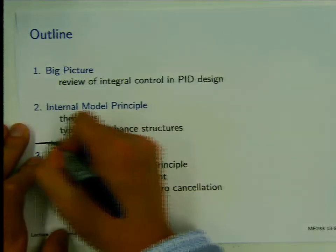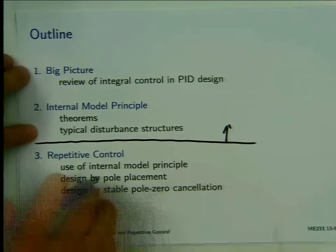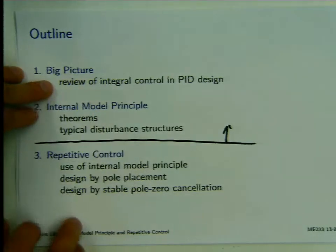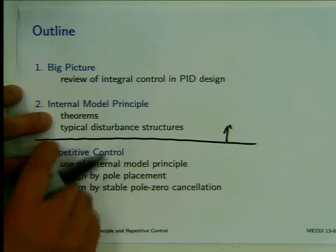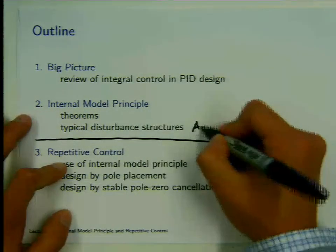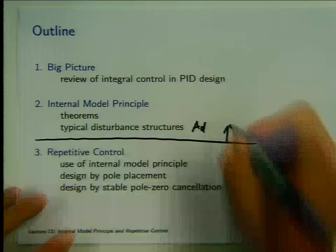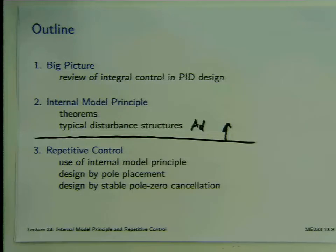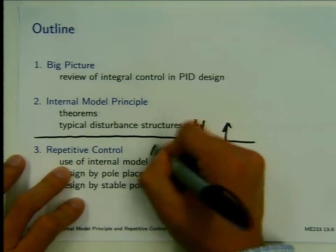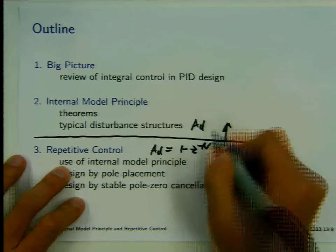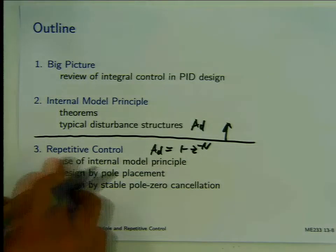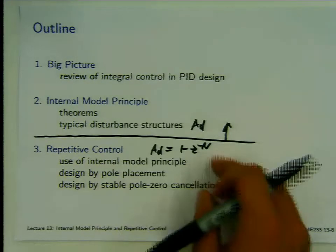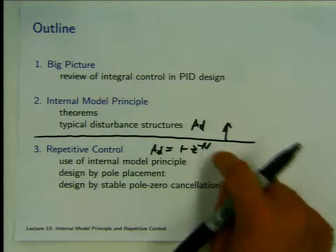If you think about what we have done: we reviewed integral control and PID design, introduced the internal model principle in both continuous and discrete time, and analyzed typical structures of A_D. In the remainder of the course, we are going to focus on the periodic disturbance case, where A_D corresponds to a periodic signal. This is called repetitive control. Hopefully, from here, we can generalize to other disturbances.